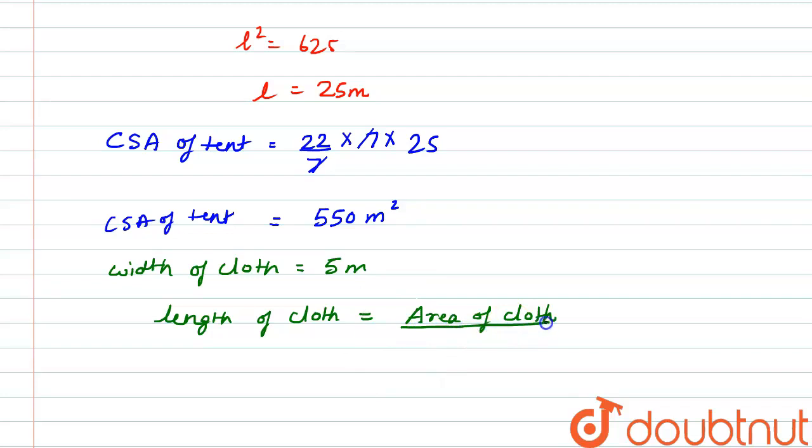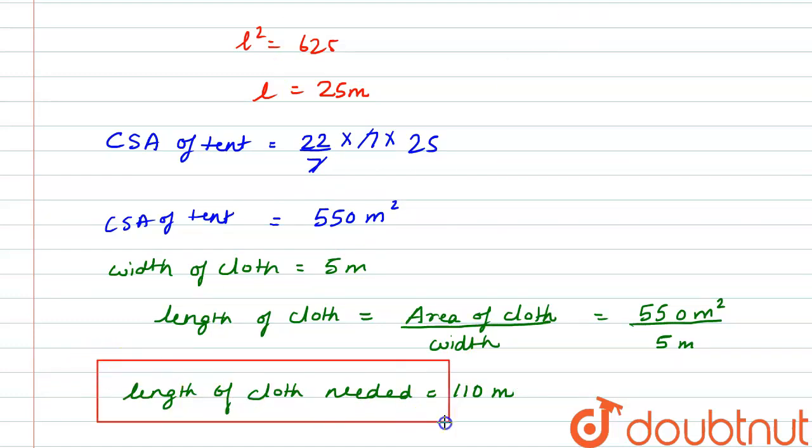And that will be area of the cloth, which will be the area of the tent divided by the width. Okay, so that is area 550 meter square divided by the width is 5 meter. So the length of the cloth needed is 550 by 5, which is 110 meters. So the total length of the cloth needed is 110 meters